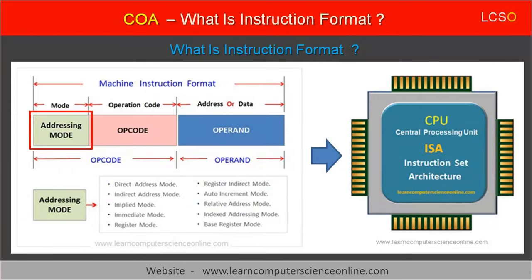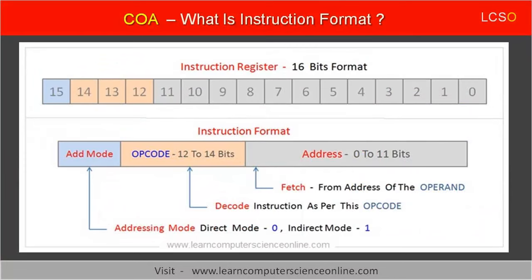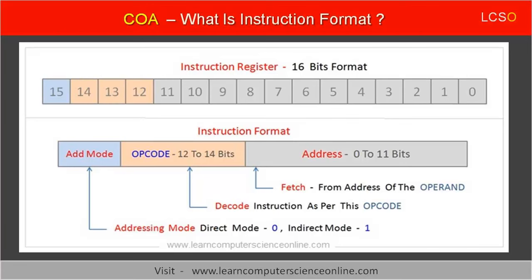The first field of the instruction format is addressing mode. The data to be operated by the CPU can either be stored in the main memory RAM, or it can be located in the CPU register. The addressing mode is represented by a single bit — for example, in a 16-bit instruction format, the addressing mode is represented by the 16th bit. The addressing mode directs the CPU to locate the data operand as specified in the machine instruction format.